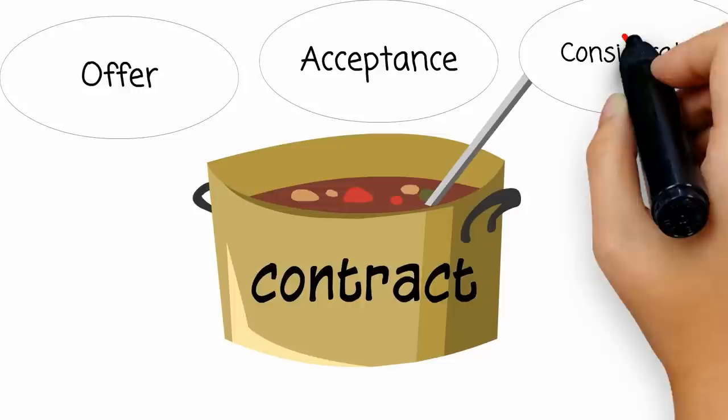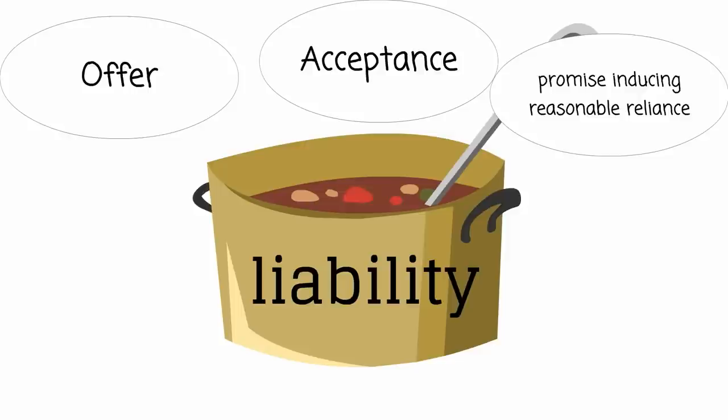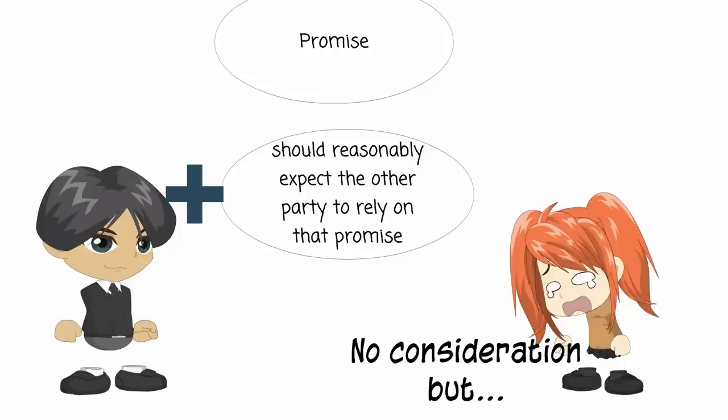With promissory estoppel, instead of consideration, we have a promise that induces reliance and the court finds some liability for the promise. So look for a situation where one party makes a promise, that party should expect that the person to whom he made the promise will rely on that promise, and as a result, there is an injury.